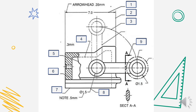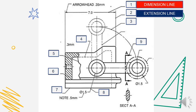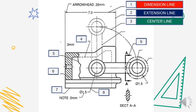Let's check the answers. Number 1: the answer is dimension line — because it has a numerical value, a measurement, and arrowheads. Number 2: it sets the limit for the dimension line — the answer is extension line. Number 3: it passes through circular holes — the answer is center line. Number 4: short dashes showing invisible or hidden edges — the answer is hidden line.